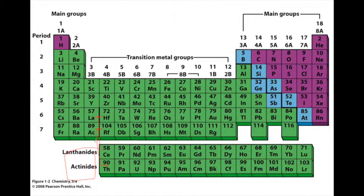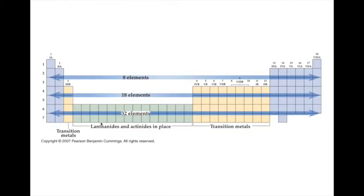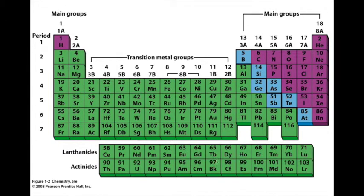Generally the lanthanides and actinides are separated out and that's not really for any special reason, it's just to make the periodic table more compact. If you added the lanthanides and actinides in there, the periodic table would look something like this. Here you can see the lanthanides and actinides are inserted into their proper position in the transition metals. That just tends to make the periodic table a little wider and harder to put into a textbook or onto a poster.